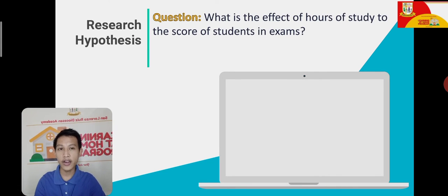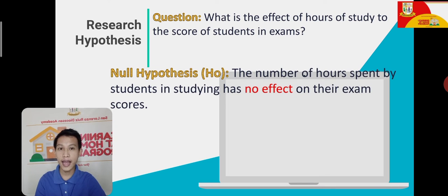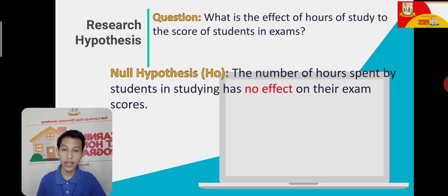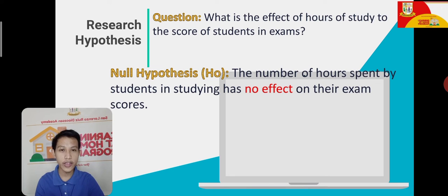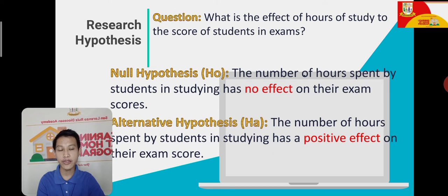Next example. The research question is: What is the effect of hours of study on the exam scores of students? Null hypothesis: The number of hours spent by students in studying has no effect on their exam scores. The elements are: the group — students; the variables — hours spent studying and exam scores; the predicted outcome — 'has no effect.' Alternative hypothesis: The number of hours spent by students studying has a positive effect on their exam scores. The alternative hypothesis is simply the reverse of the null.